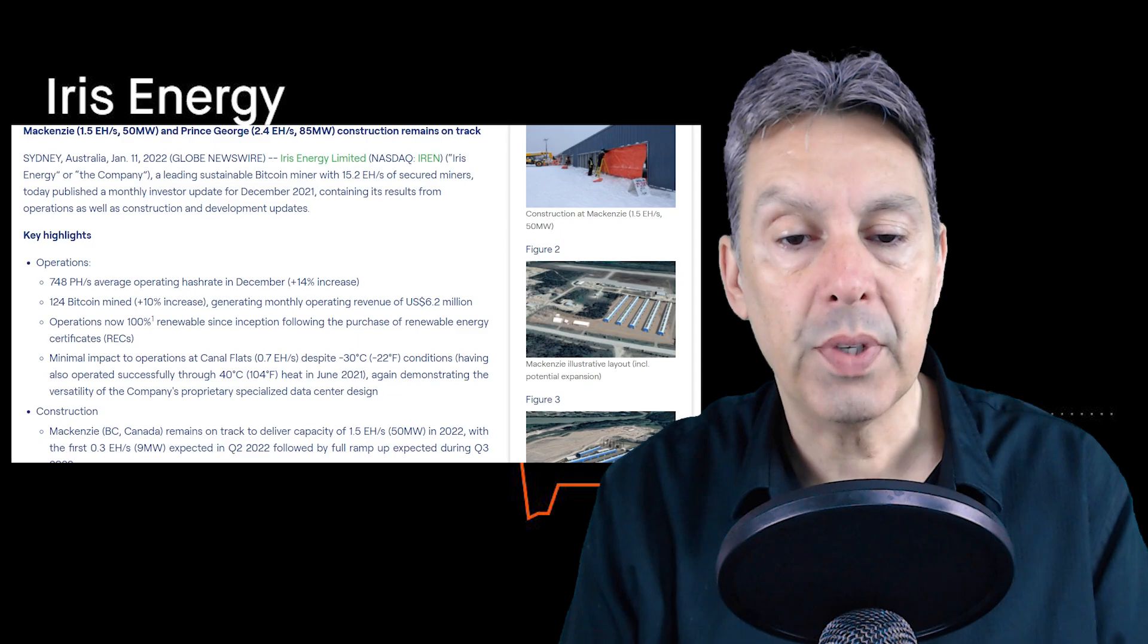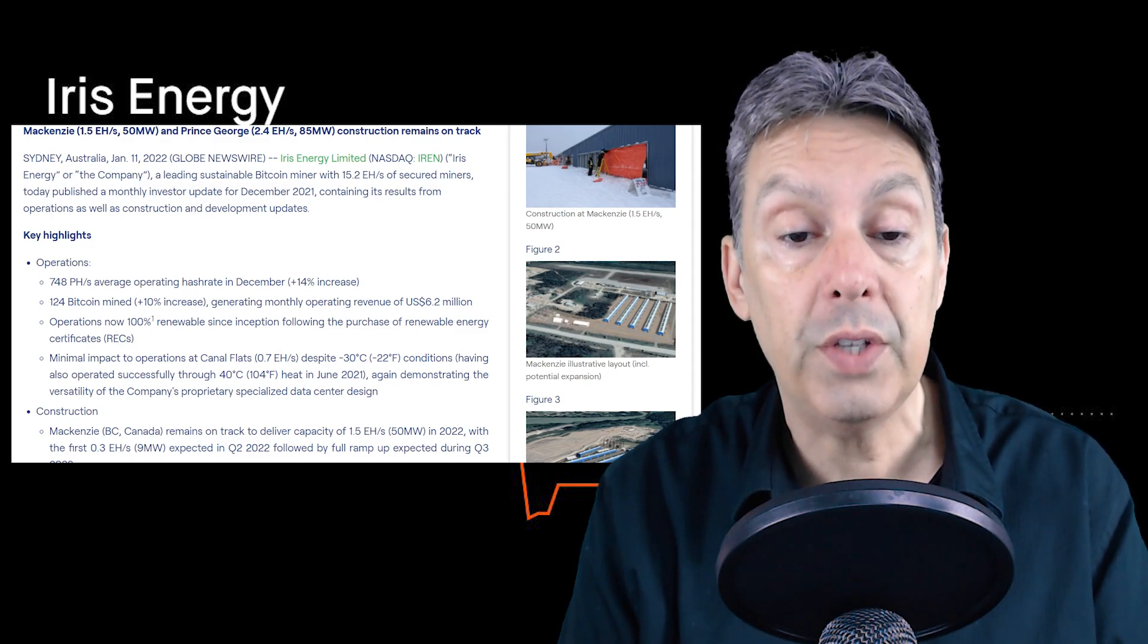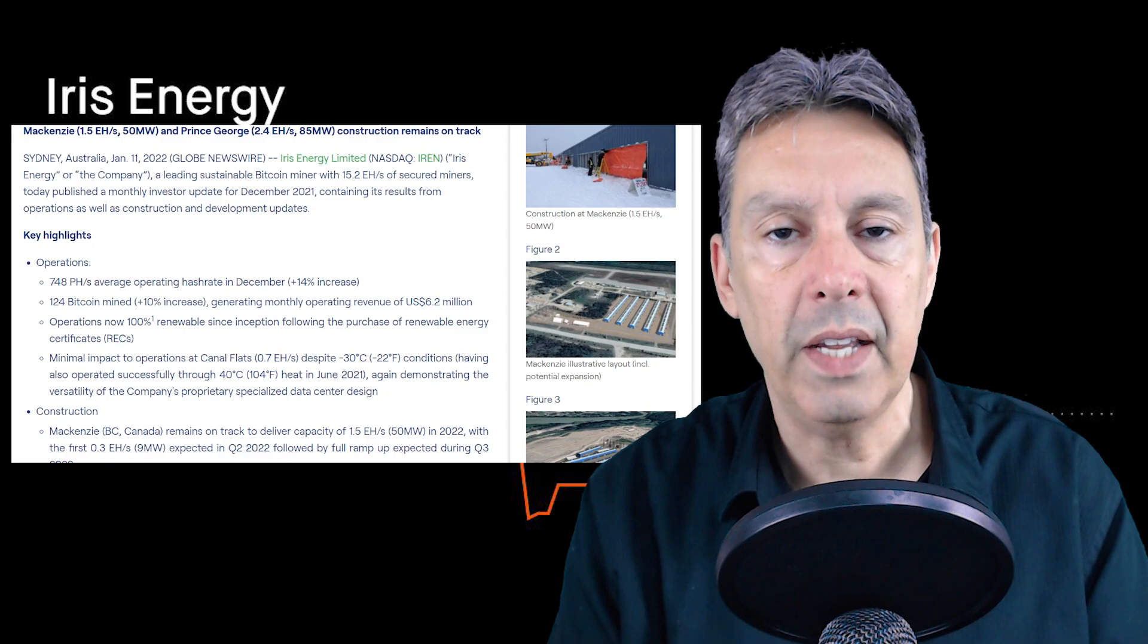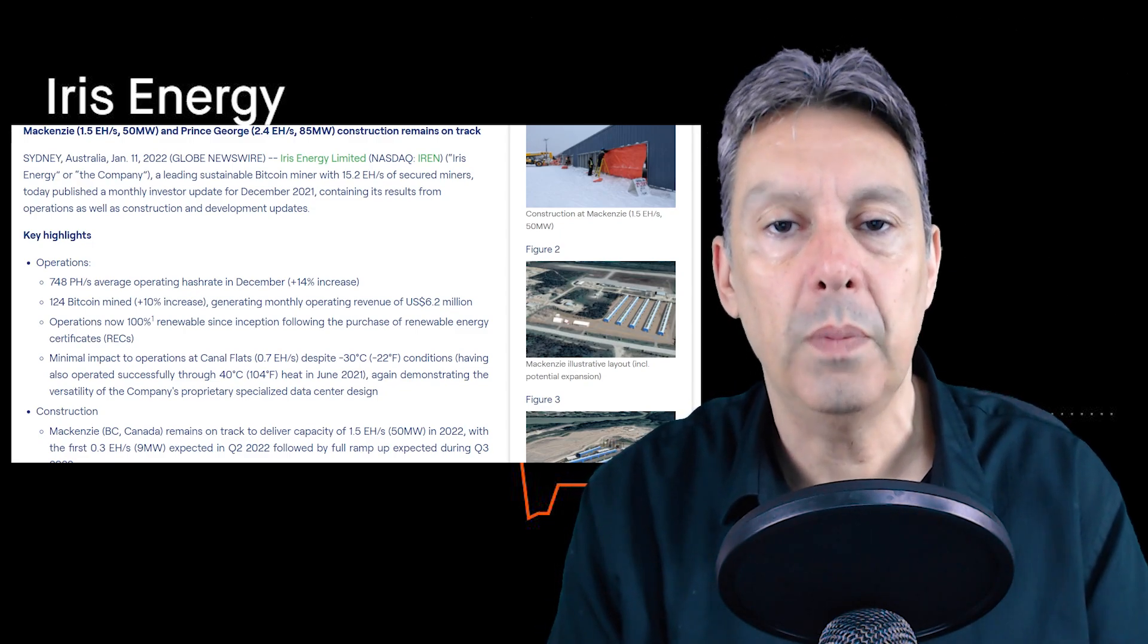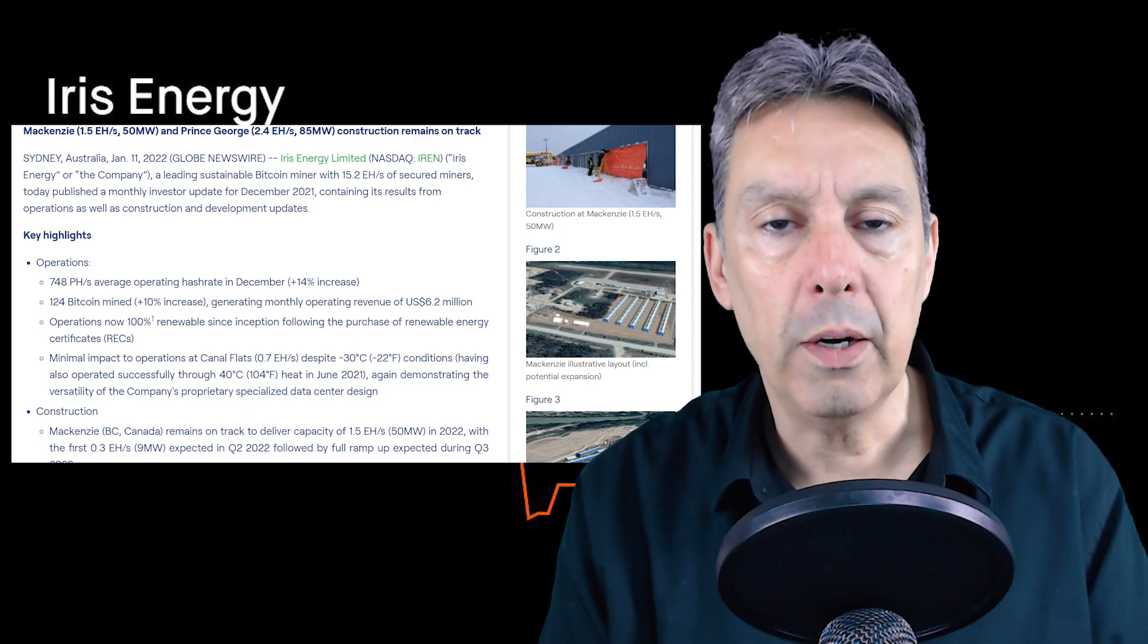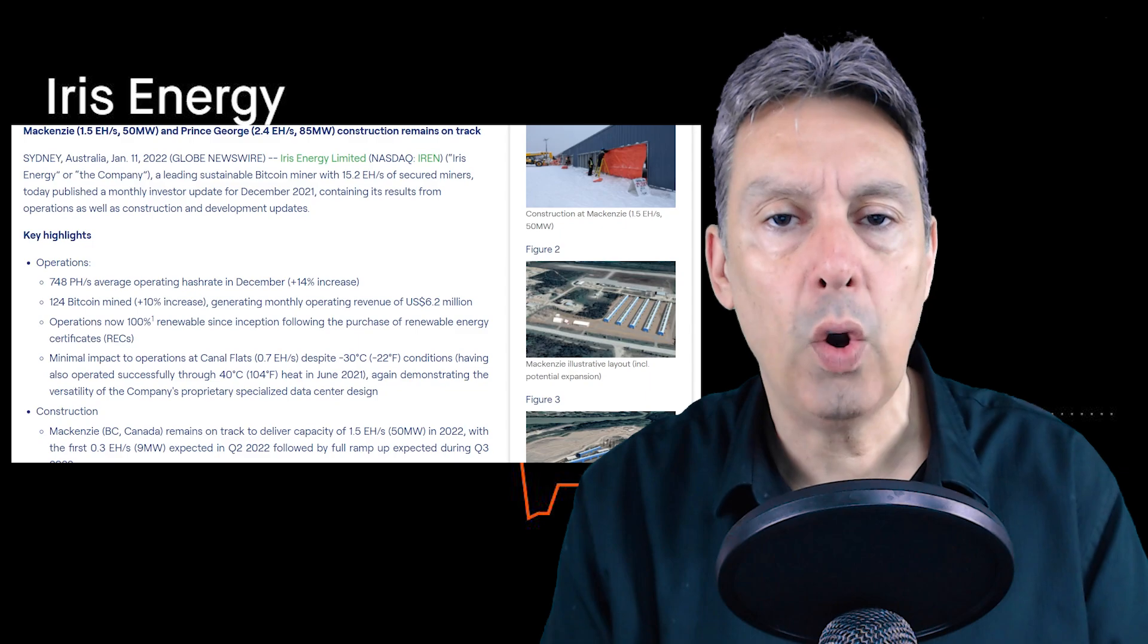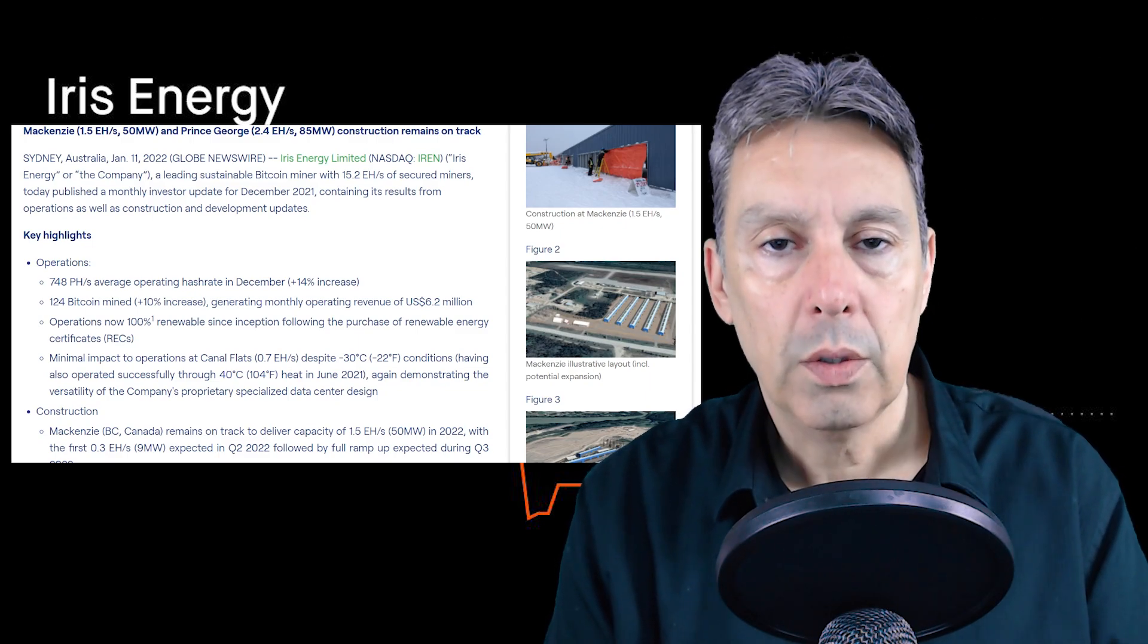Then they say operations are now 100% renewable since inception following the purchase of renewable energy certificates. We know that the bitcoin miners have come under a lot of pressure based on the amount of energy that it takes to mine bitcoin. There's huge pressure for these guys to be as green as they can be. A lot of North American miners are striving towards somewhere between 95% and 100%. Some of them are very close or already at that goal. Some of them have a long way to go, but the pressure is huge. So this is an important piece of the puzzle for every bitcoin miner.